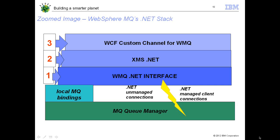This is the zoomed-in image. This slide previously showed the complete MQ clients portfolio, but the current slide shows the zoomed-in image of the MQ.NET stack. We'll go from bottom up. We have MQ queue manager, which is the MQ server, and then we have MQ.NET interface, which is the overall classes on MQI, written in C-Sharp. On top of this MQ.NET interface, we have XMS.NET, which is based on JMS specification. On top of XMS is the MQ's custom channel for WCF. This is how all these clients are layered in the MQ.NET stack.